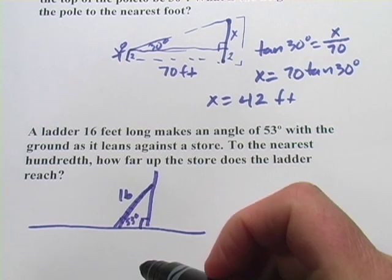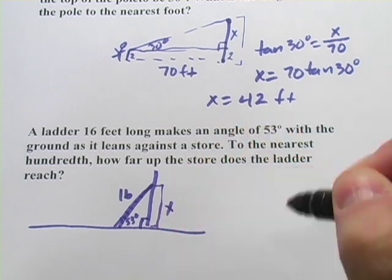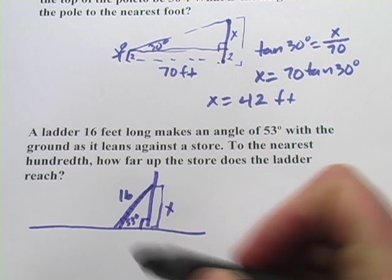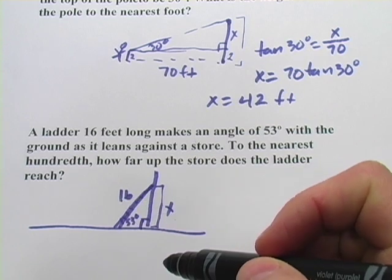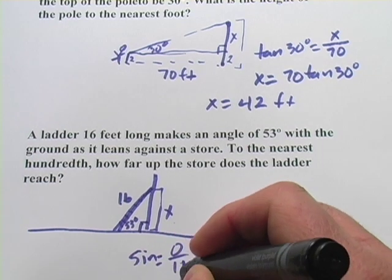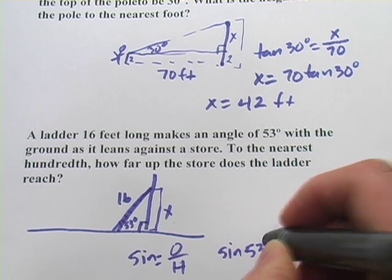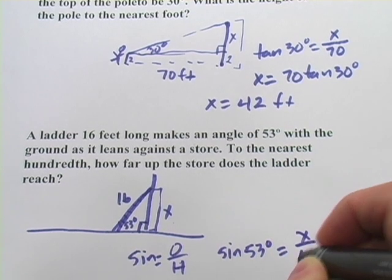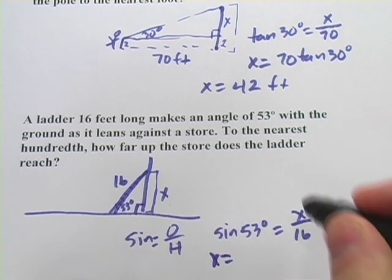And we want to find how far up the store does the ladder reach. So we're looking for this distance here. So that's our x. So from the angle side, we have the opposite side that we're looking for, and then we have the hypotenuse. So using SOHCAHTOA, sine is the opposite over the hypotenuse. So this one is going to be the sine of 53 degrees equals x over 16, or x equals, multiplying both sides by 16, 16 times the sine of 53 degrees.